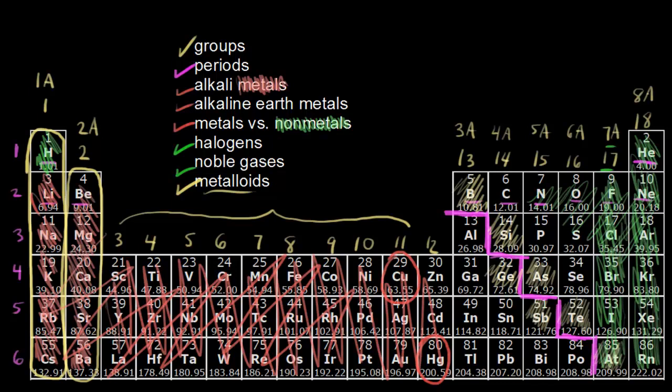And there's no official one definition for which elements are considered to be metalloids, and so you might see a little bit of a discrepancy there for some of these elements. But in general, those are the ones that are considered to be metalloids, and silicon probably being the most famous one.